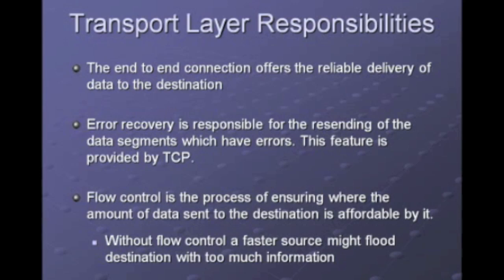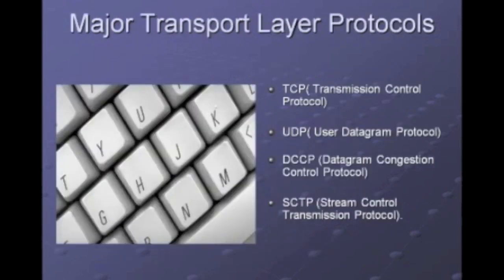The end-to-end connection offers reliable delivery of data to the destination. Error recovery is responsible for the resending of data segments which have errors in them, and that is provided by TCP. Flow control is a process of ensuring that the amount of data sent to the destination is manageable by it — basically, if data is flowing faster than the destination can receive, it controls the flow to prevent overflow. The major transport layer protocols include TCP, UDP, DCCP, and SCTP. The most popular is the Transmission Control Protocol, which works with IP, the Internet Protocol, hand-in-hand.